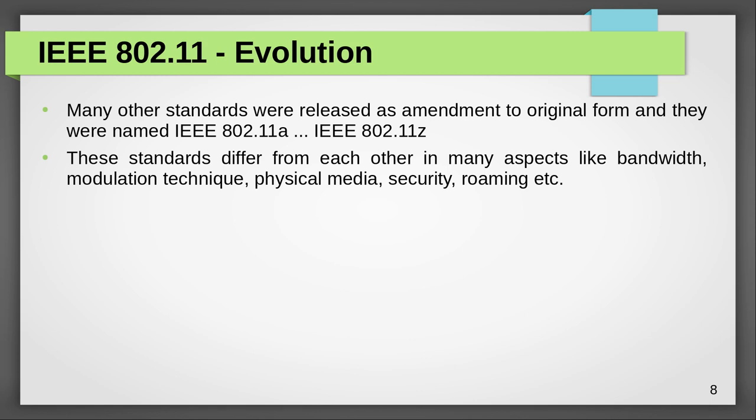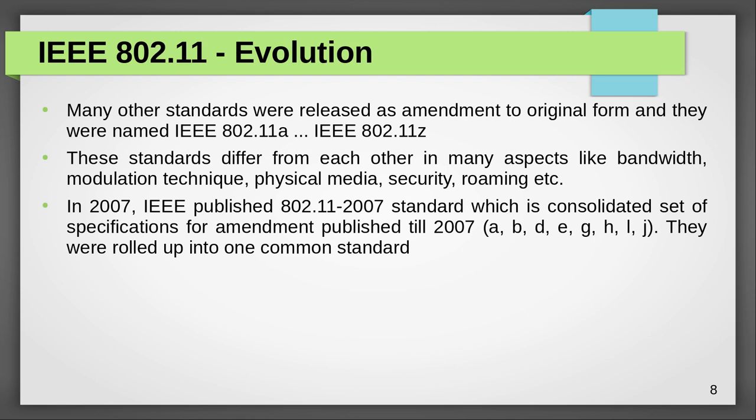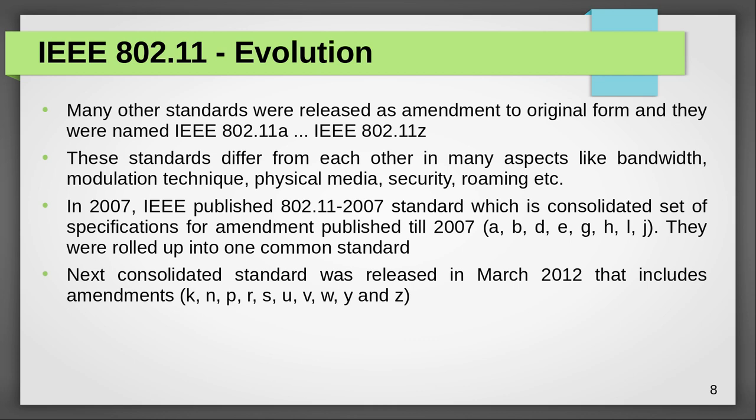Some kind of consolidation was needed. In 2007 IEEE published a standard called 802.11-2007, which is a consolidated set of specifications for amendments published till 2007. The amendments A, B, D, E, G, H, L, and J were rolled up into one common standard. A similar consolidation happened in 2012 — the next consolidated standard was released in March 2012, which included amendments K, N, P, R, S, U, V, W, Y, and Z.